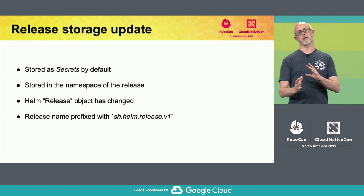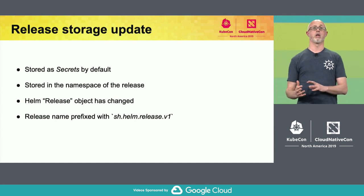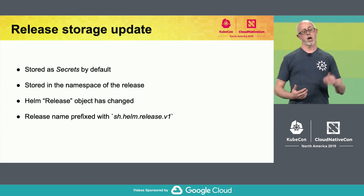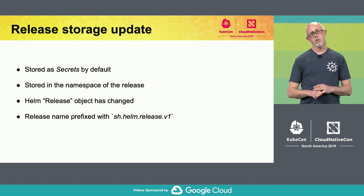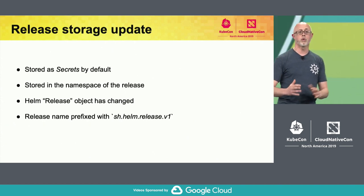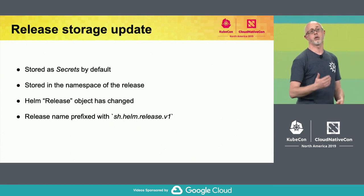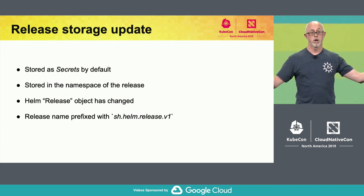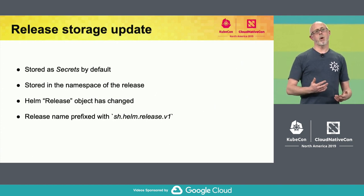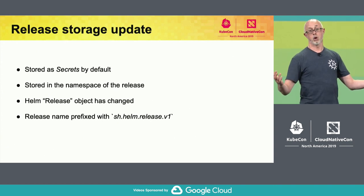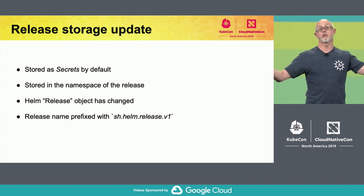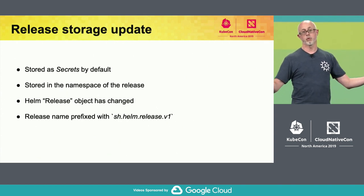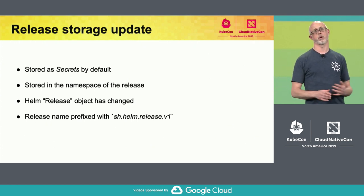Another big aspect of the changes is how we store release objects. In v2, they were stored as ConfigMaps inside the cluster; now they're stored as secrets by default. Also, because we no longer have Tiller — where everything was running under Tiller's namespace — objects are now stored correctly under the namespace of the particular release you want to deploy in. This brings namespace-scoped release name uniqueness: before, release names were effectively cluster-wide if you had one Tiller instance, but now they're unique just to the particular namespace, meaning you can repeat names across different namespaces.